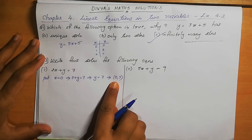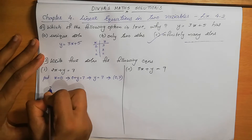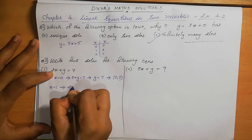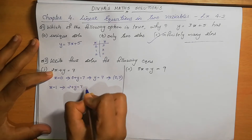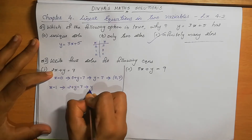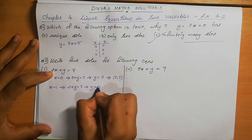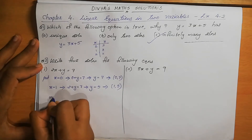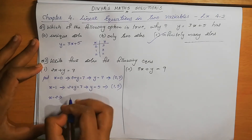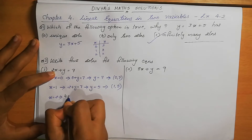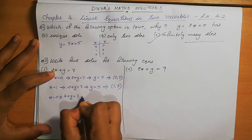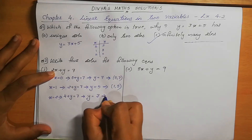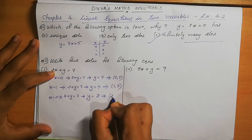We write x value first, then y value. Put x=1: 2×1 + y = 7, so 2 + y = 7, giving y = 7 − 2 = 5. The solution is (1, 5). Put x=2: 2×2 + y = 7, so 4 + y = 7, giving y = 7 − 4 = 3. The solution is (2, 3).